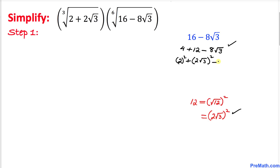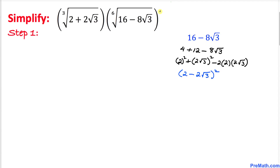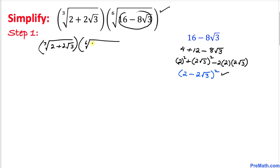This part — 8 times square root of 3 — can be written as 2 times 2 times 2 times square root of 3. Now we can see that this represents a perfect square, so we are going to use this formula. This could be written as 2 minus 2 times square root of 3, whole squared. So therefore, this problem becomes the cube root of 2 plus 2 times square root of 3, times the 6th root of 2 minus 2 times square root of 3, whole squared.